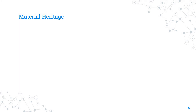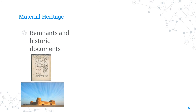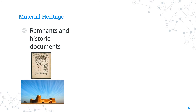Material heritage includes all types of heritage that can be seen and felt. First, we have remnants and historic documents, which include everything our forefathers built, such as towers, forts, and castles, as well as books and manuscripts they left for us.